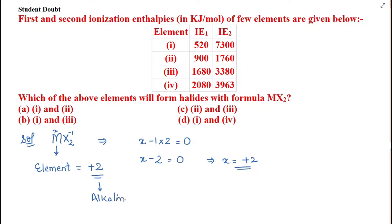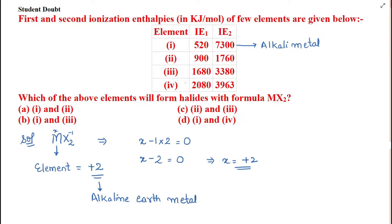Alkaline earth metals usually have a +2 oxidation state. We can solve these types of questions by hit and trial. For the first element, the first ionization enthalpy is very low but the second ionization enthalpy is very high. Alkali metals have one valence electron; once they lose it they acquire noble gas configuration, making the second ionization enthalpy very high. So element one is an alkali metal.